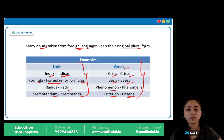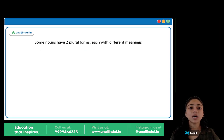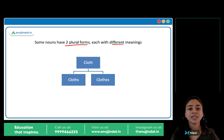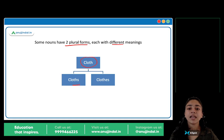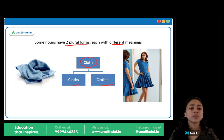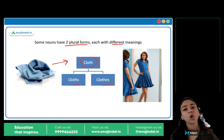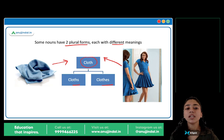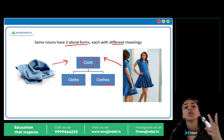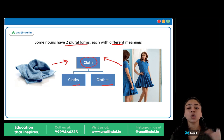So I hope the difference is clear. Next — some nouns have two plural forms. Kuch nouns ke dho plurals hote hain and dono ke alag-alag meanings hote hain. Jaise the word cloth — kapda. Iske dho plurals hain: cloths and clothes. Yahan pe bas S add hua hai, yahan pe ES add hua hai. Cloths refers to cleaning cloths, while clothes refers to garments you wear — two plural forms with different meanings.